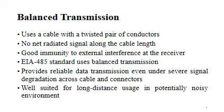Balanced transmission uses a cable with a twisted pair of conductors. One of the pair carries a signal that is the positive data (A signal), and the other carries the opposite signal, known as the B signal, which is negative data. A typical balanced transmitter drives both the A and B conductors. A digital one is sent when the A wire is at a higher potential than the B wire; a digital zero is sent when the A wire is at a lower potential than the B wire.